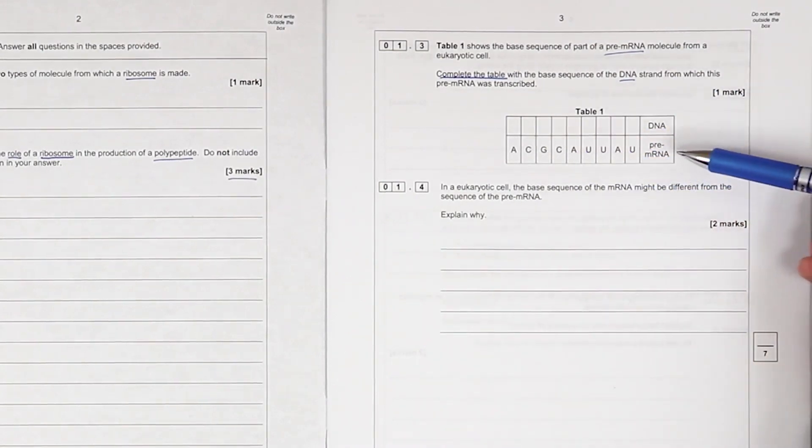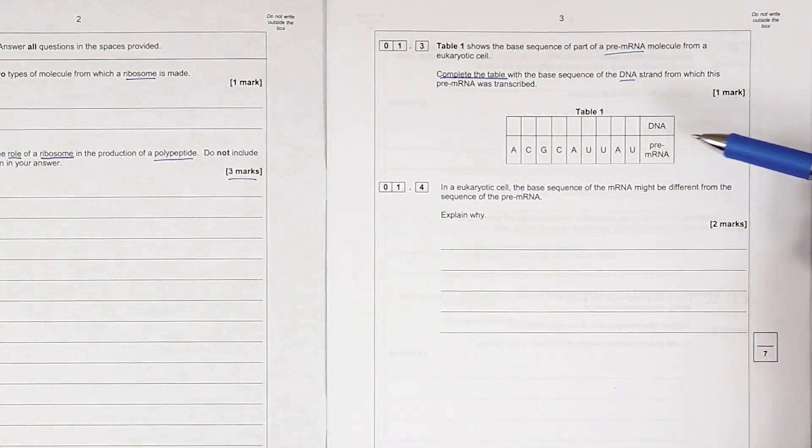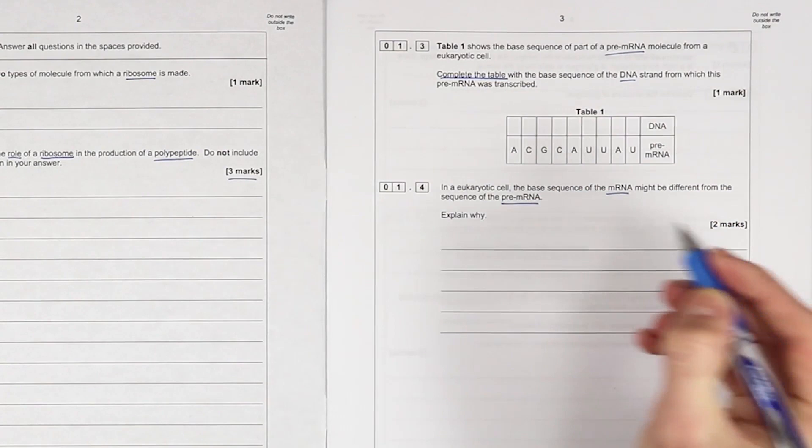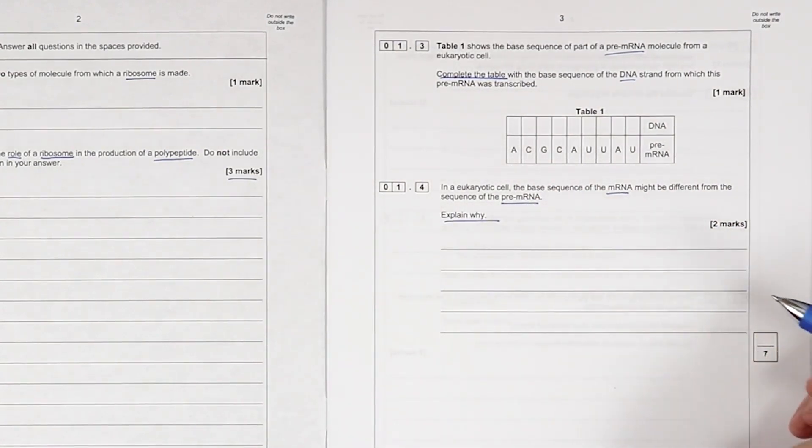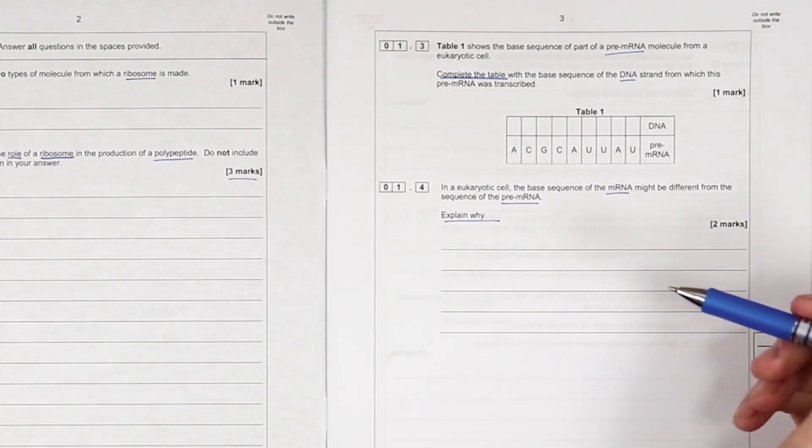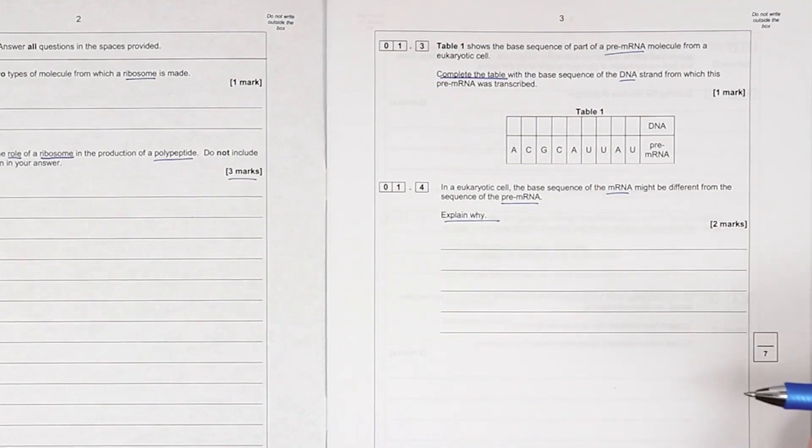You need to be able to go back and forth. So this is complementary base pairing, but obviously messenger RNA and DNA have one major base difference. What is it? Find it and do it. In a eukaryotic cell, the base sequence of messenger RNA might be different from the sequence of pre-messenger RNA. So give two reasons why. Two key terms. This should be rapid - you know this if you know it, and you can just bang out the key term. That's the description, and what the difference is - basically describing what the key term does.